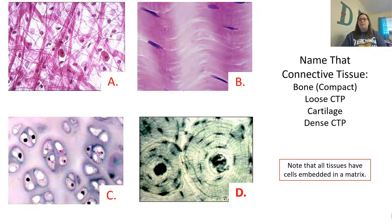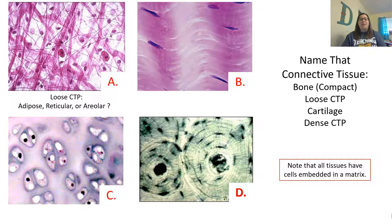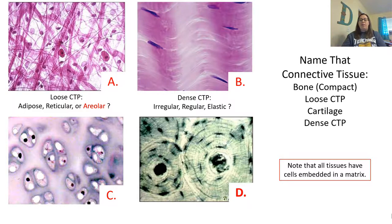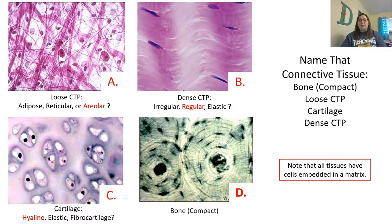Here's a quiz about naming connective tissue. A shows loosely packed fibers — loose connective tissue, specifically areolar. B shows densely packed fibers in a regular pattern — dense connective tissue, regular type. C has a gel-like matrix resembling jello with fruit — that's hyaline cartilage. D looks like tree rings — that's compact bone. Make sure you can identify connective tissues based on their characteristics.